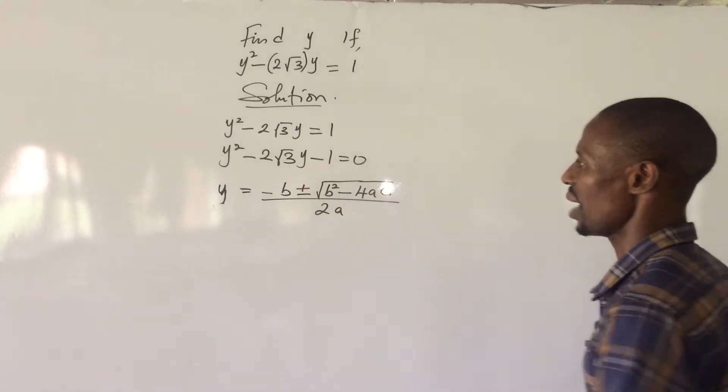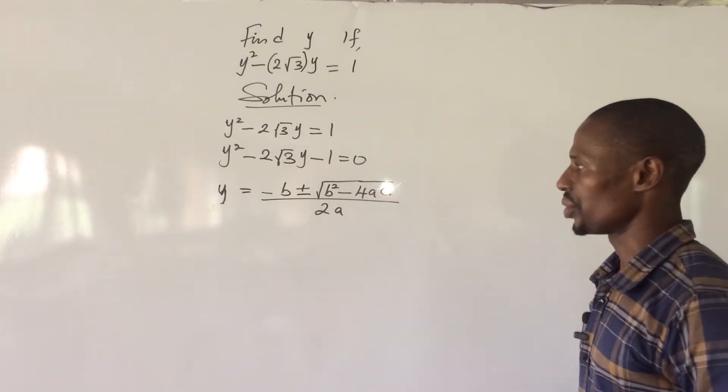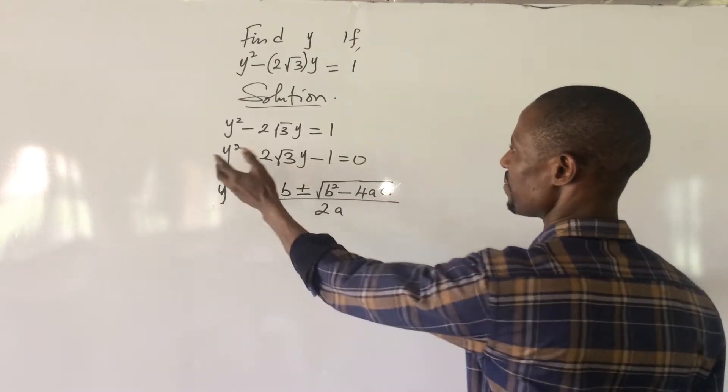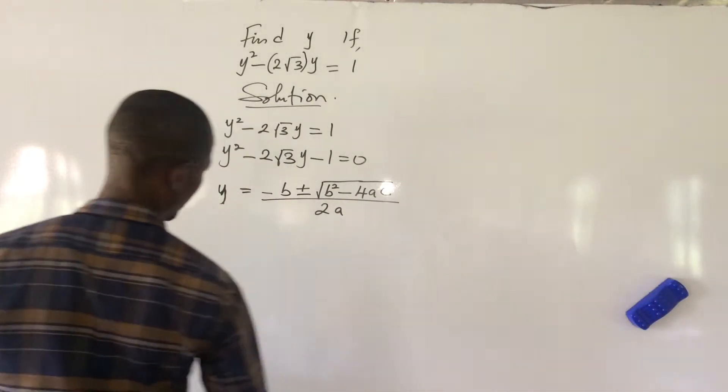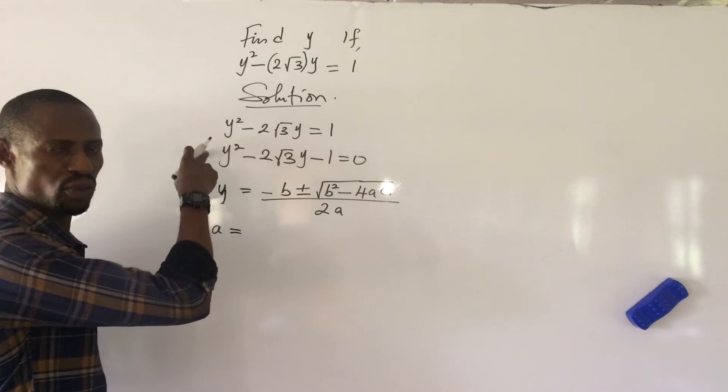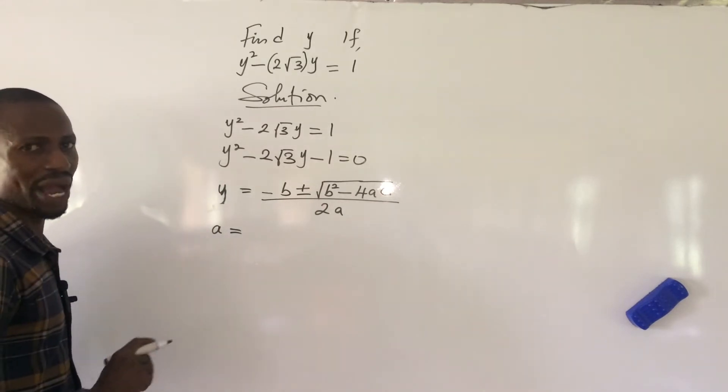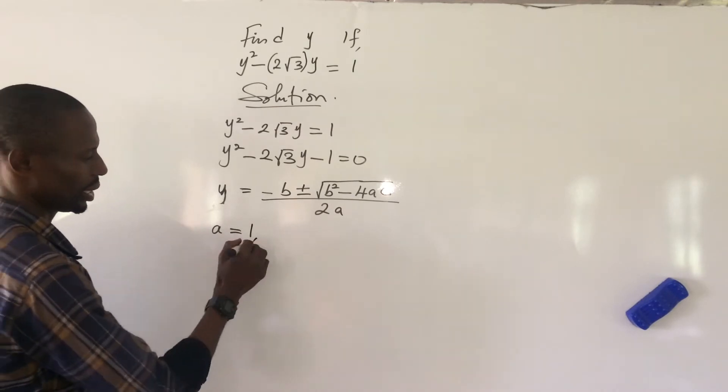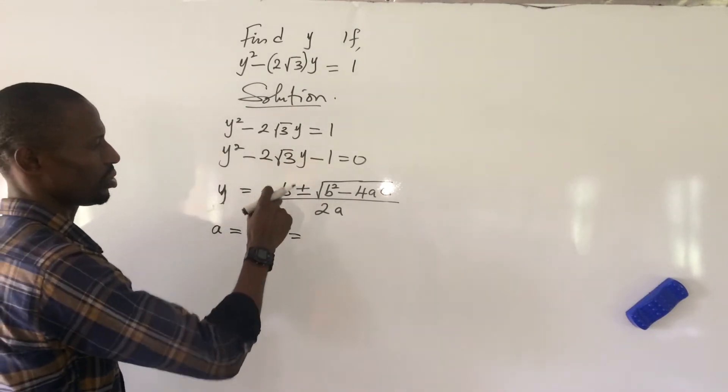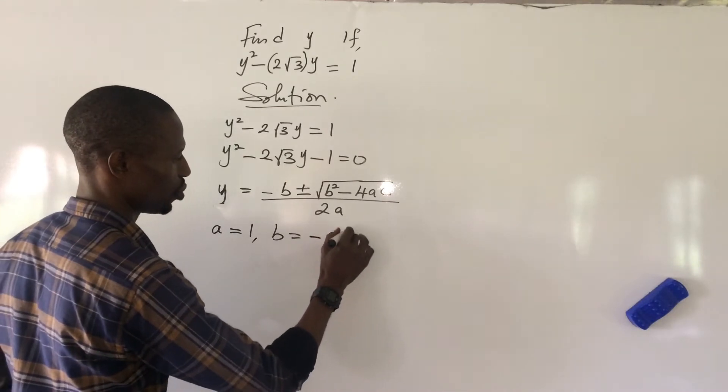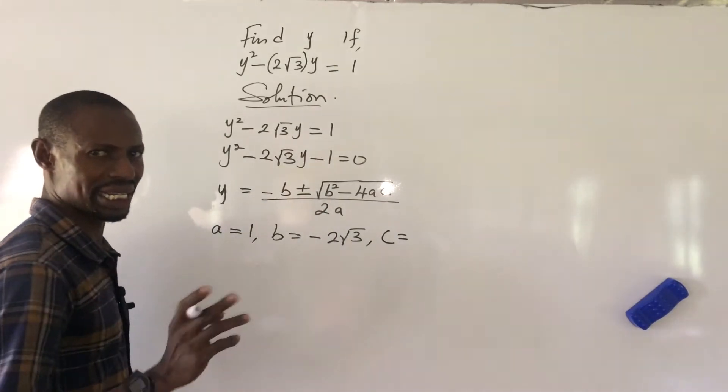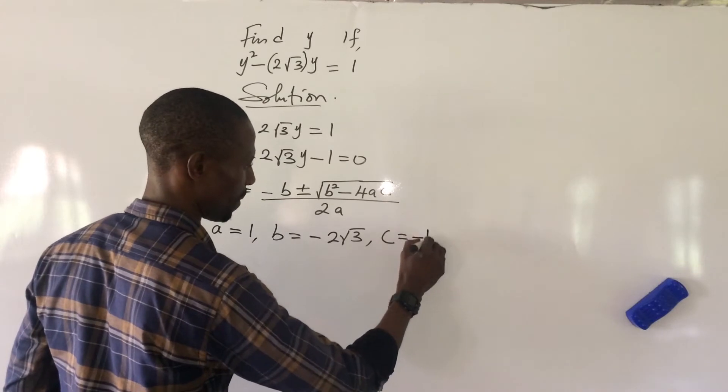All right. So, now that we have this as our quadratic formula, what do we do? We bring out the value of our b, a, and c from this equation. So, breaking that, this will give us a is the coefficient of the y squared we have here. So, the coefficient of y squared is 1, which is plus 1. Then, we go to b. The coefficient of y here, which is your b, is minus 2 root 3. And, of course, the coefficient of c, which is the constant term, is minus 1.